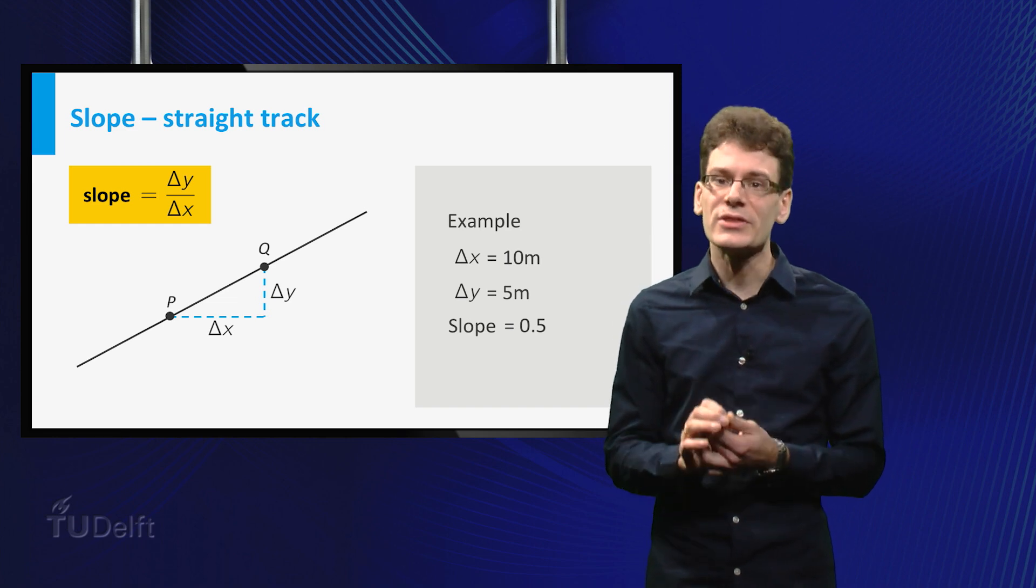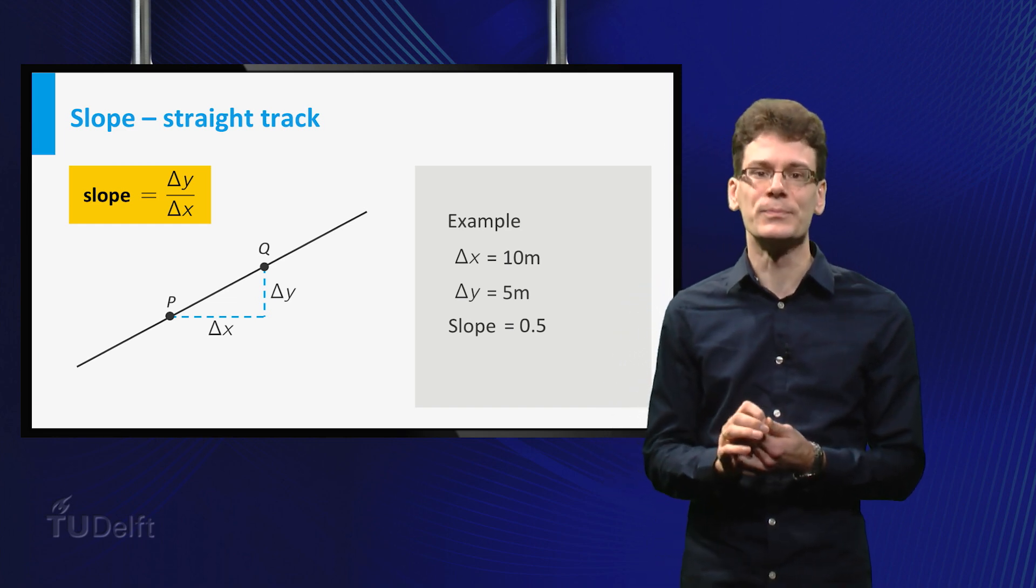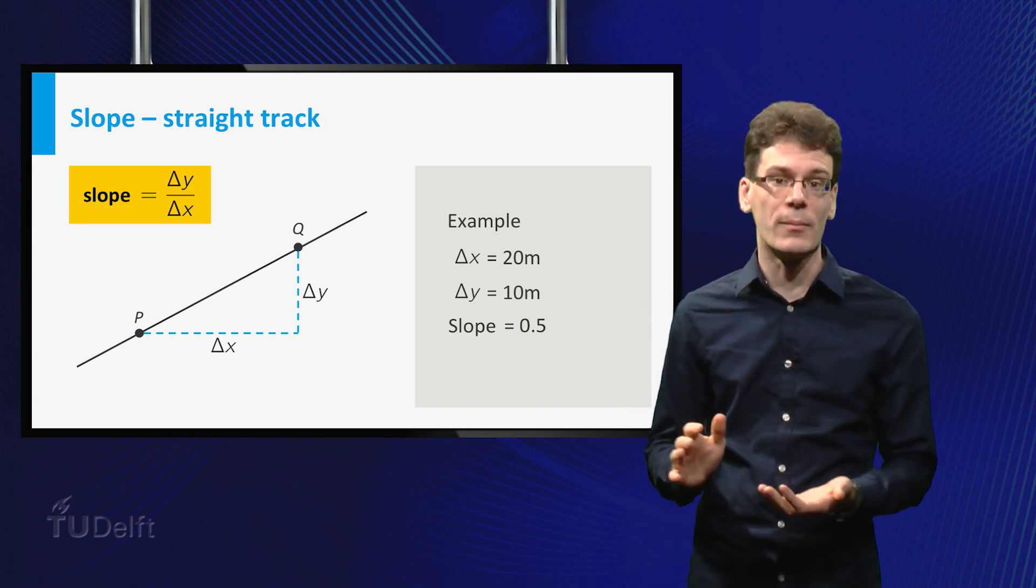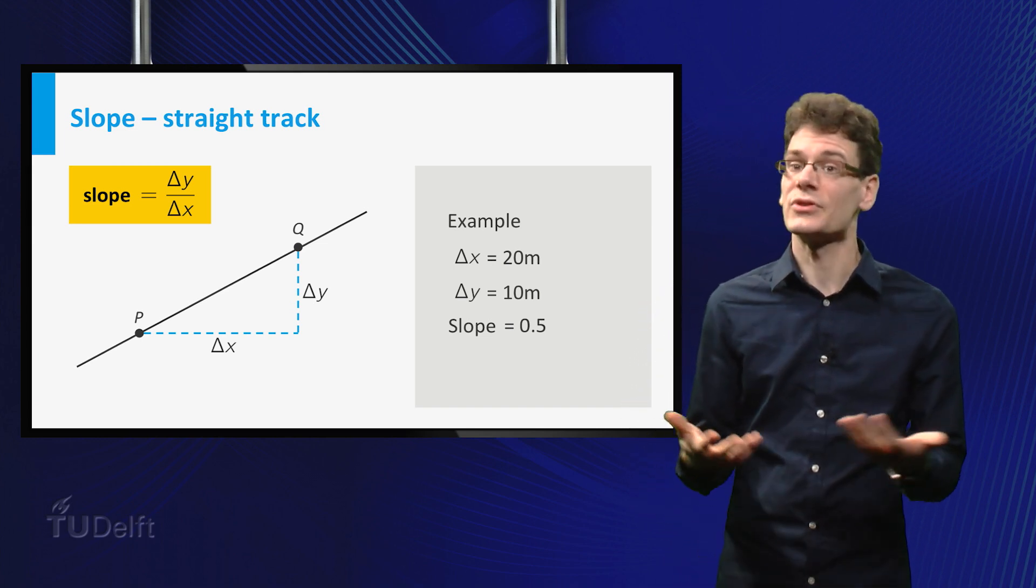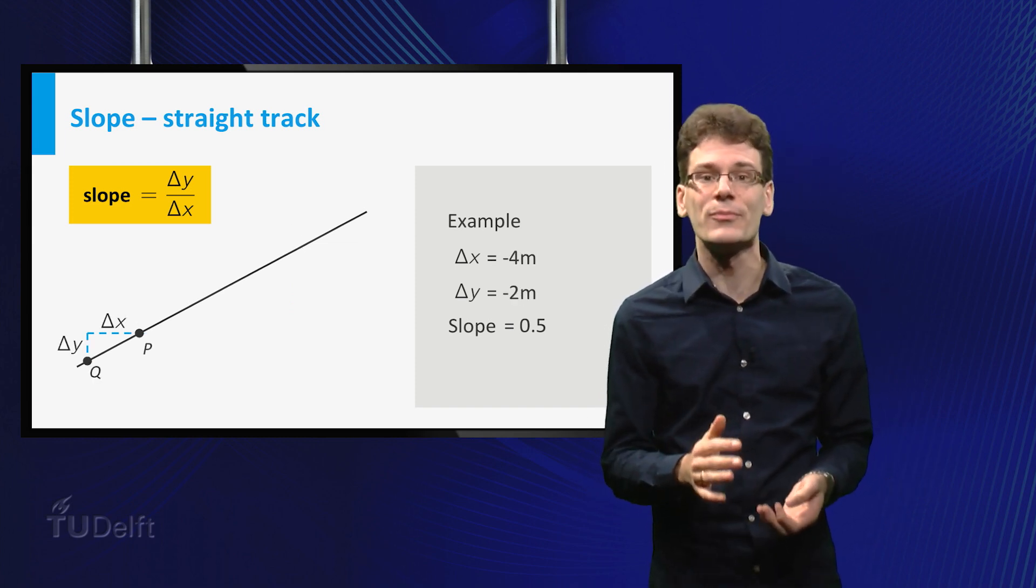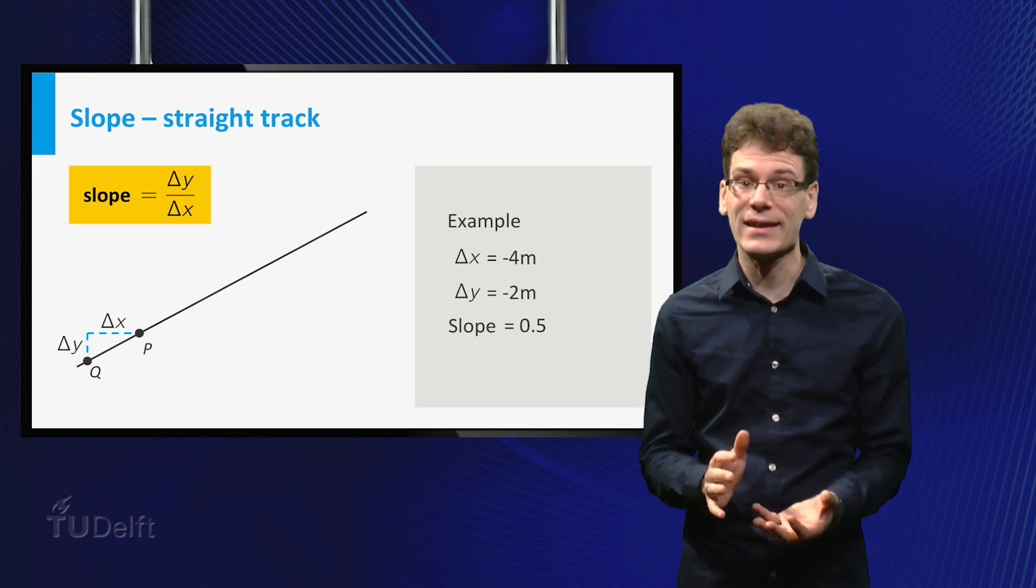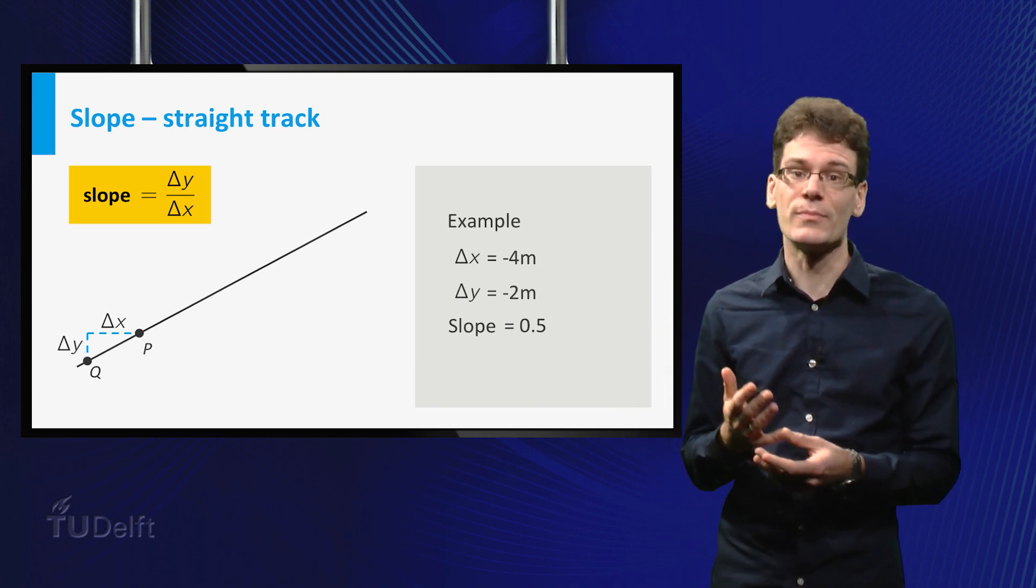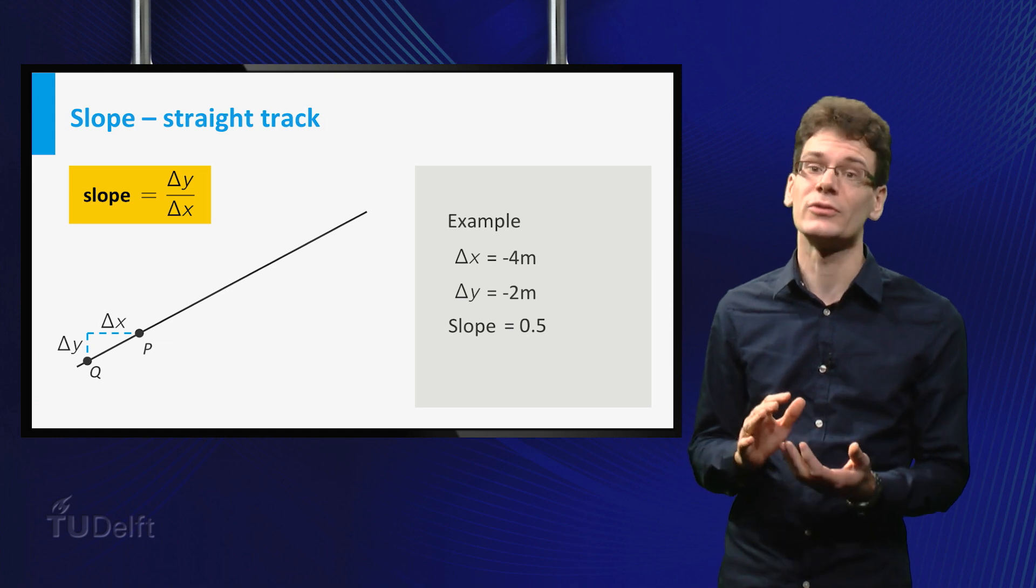Because the line is straight, it does not matter where we take P and Q. If we take Q twice as far, delta x will double, but so will delta y, so the slope remains the same. We can even take Q on the other side of P. Then delta x is negative, say minus 4 meter. Delta y then equals minus 2 meter, so the quotient remains the same.